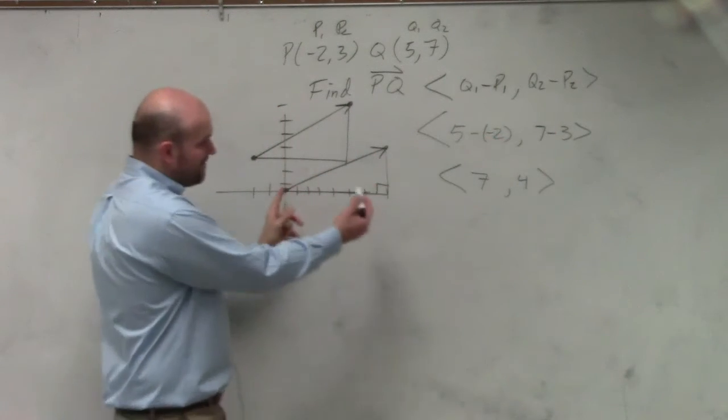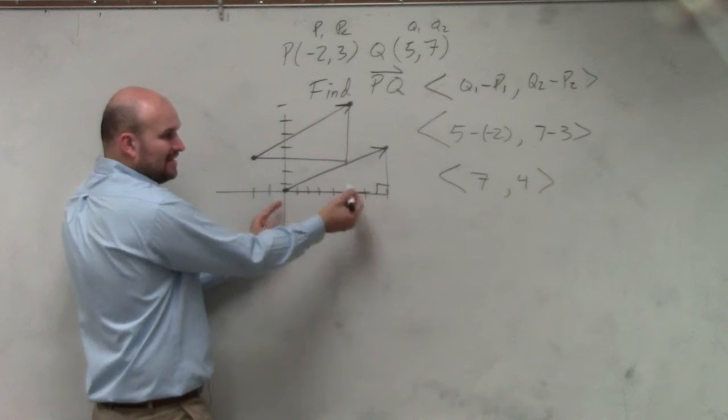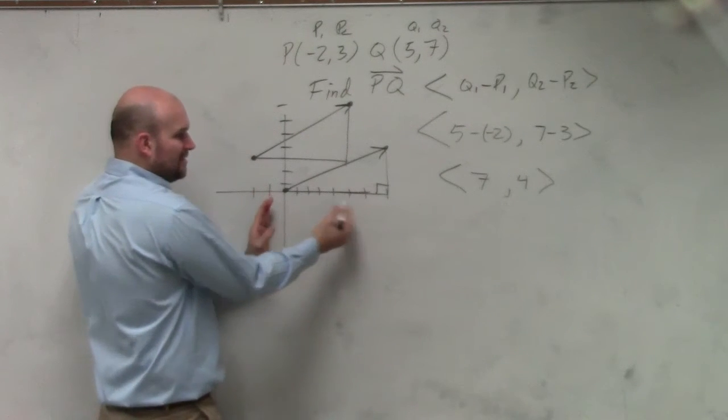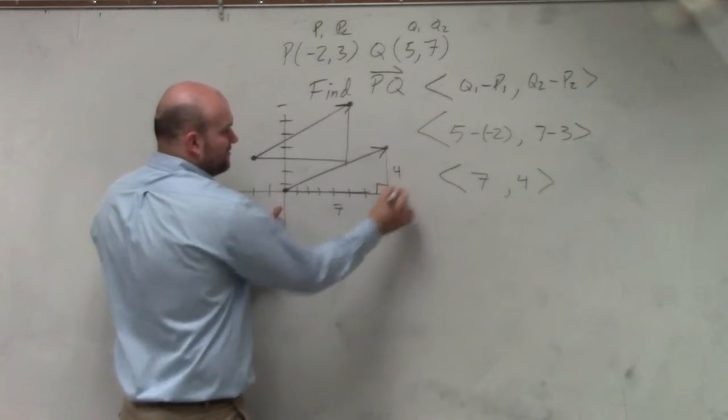But since you wrote it in component form, now my vector is from 0, 0. So I can just say it's 7 and 4, right?